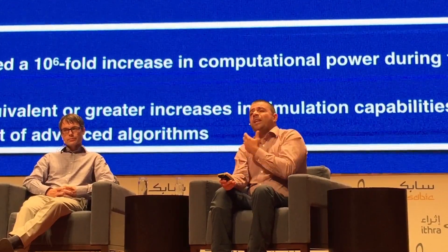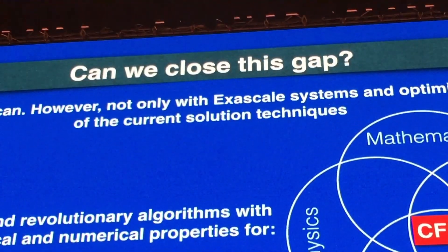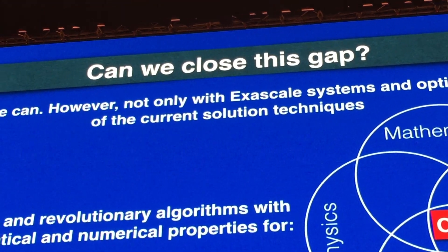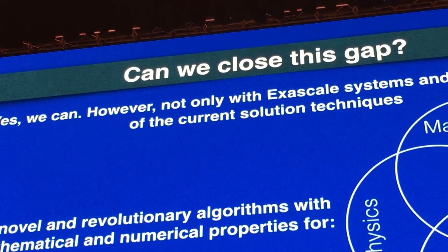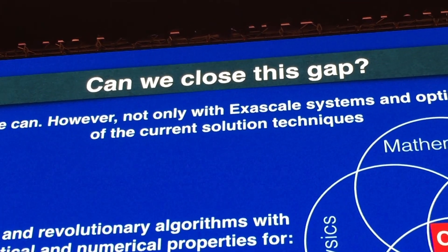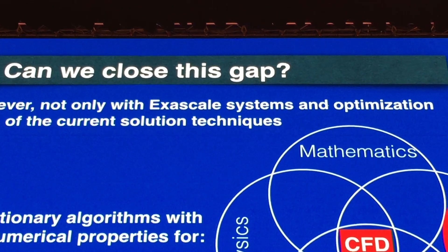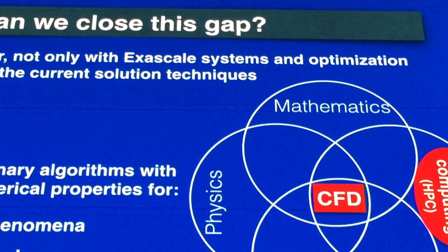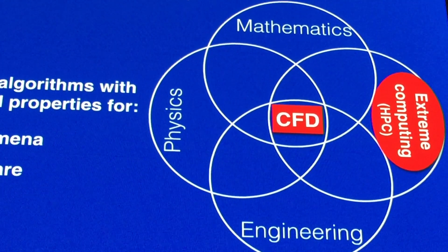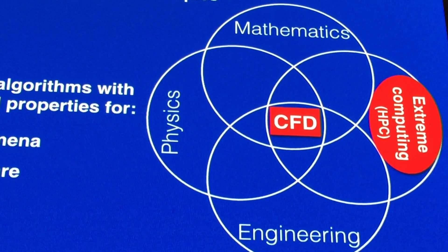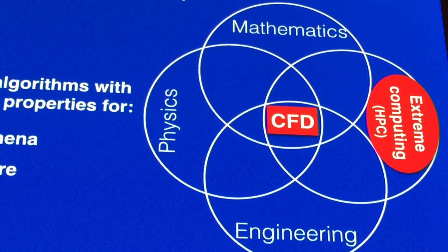Can we fill this gap? The answer is yes. CFD lies at the intersection of mathematics, physics, and engineering, because we try to solve practical problems — and also high-performance computing, extreme computing. That's what we do in the center and part of the extreme computing center. But what we need, together with the supercomputer, is also more advanced algorithms that we use to solve our problems.